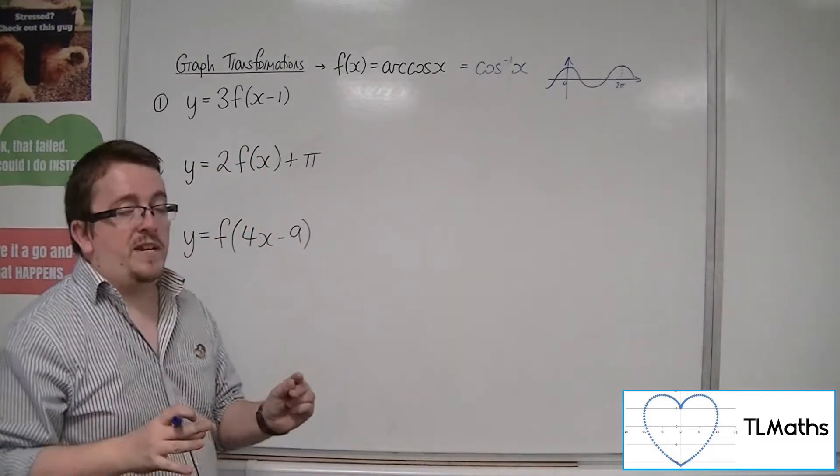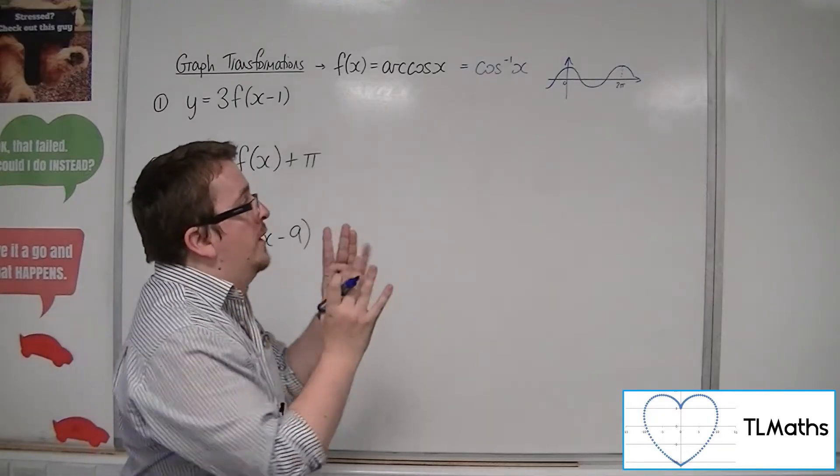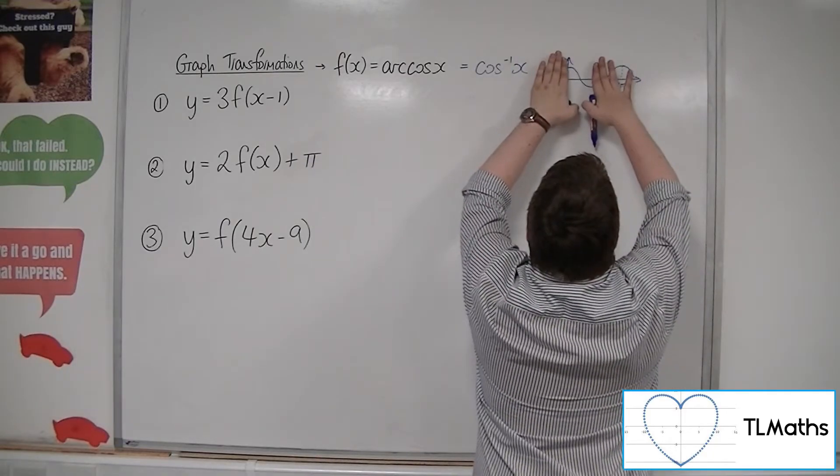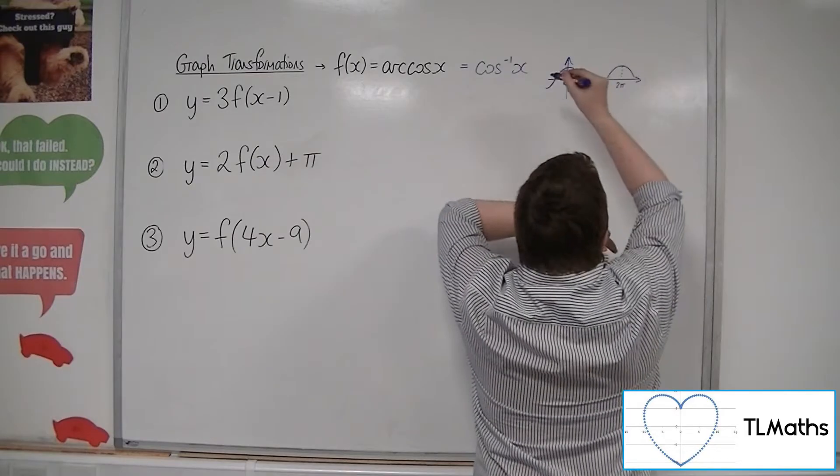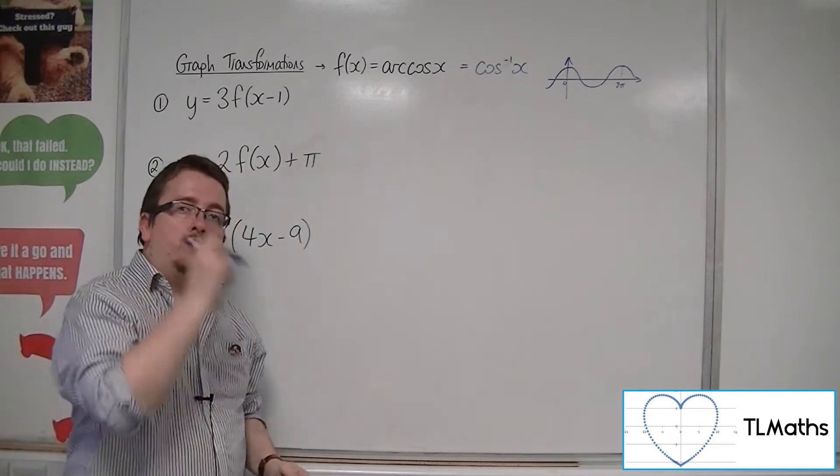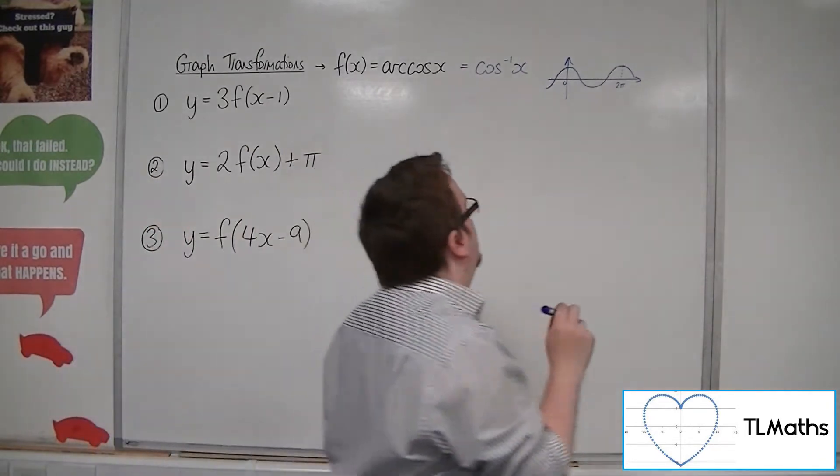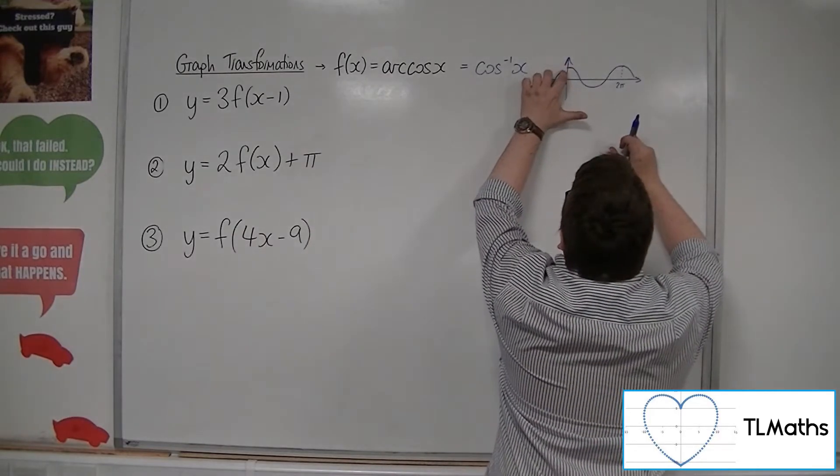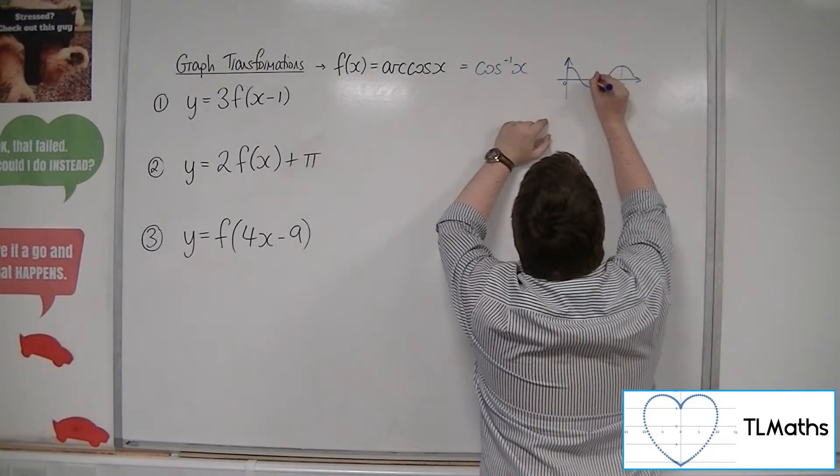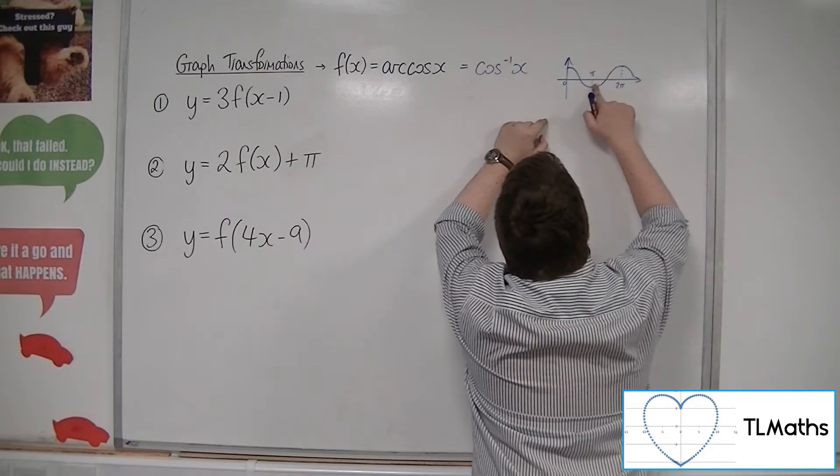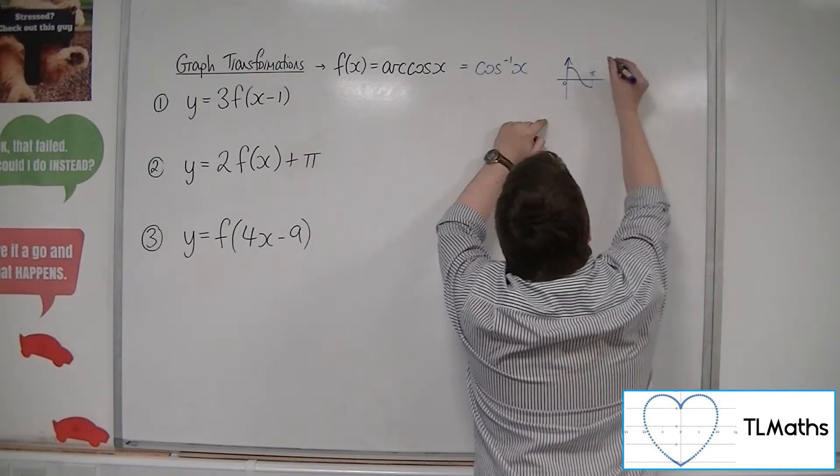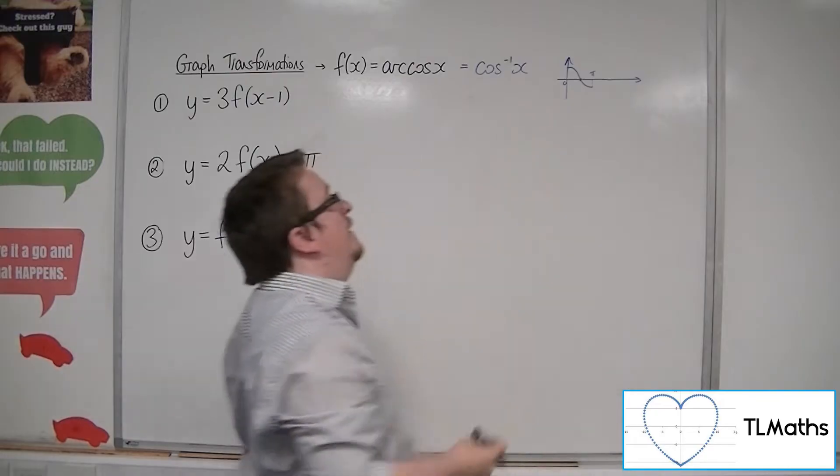But the concept is we cut it so that the function is 1 to 1. So what that means is we cut it so that if you were to draw a horizontal line across the curve, that horizontal line would only cross at most once. So if I cut it at 0 and I cut it there at pi, then that makes the curve 1 to 1. And what it does is it gives me a curve that I can find the inverse of.